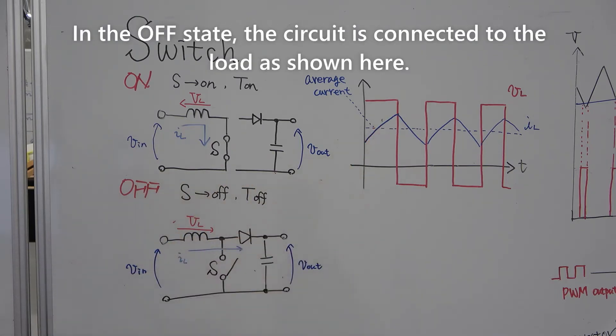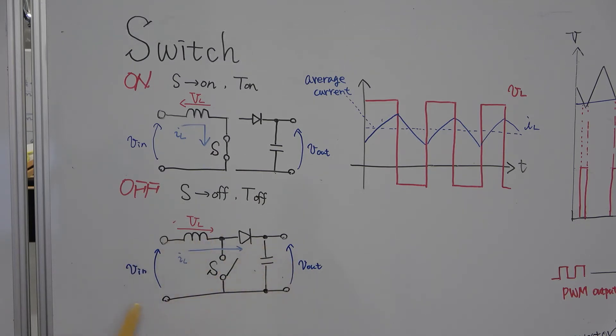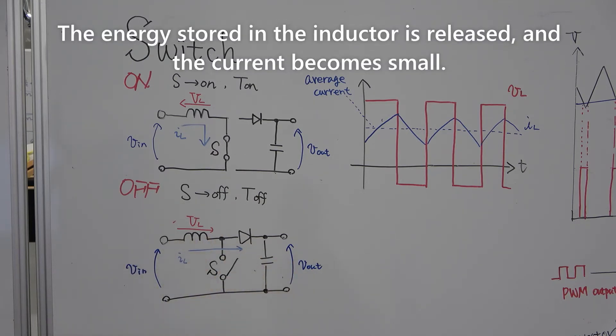In the off state, the circuit is connected to the load, as shown here. The energy stored in the inductor is released, and the current becomes small.